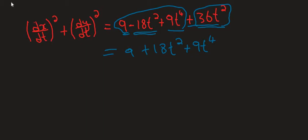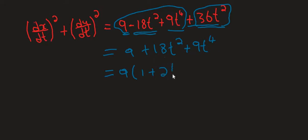Now we simplify. We take out the common factor. 9, 18, and 9 all share a common factor of 9. Taking 9 out, we are left with 1 plus 2t squared plus t to the power of 4 inside the bracket.